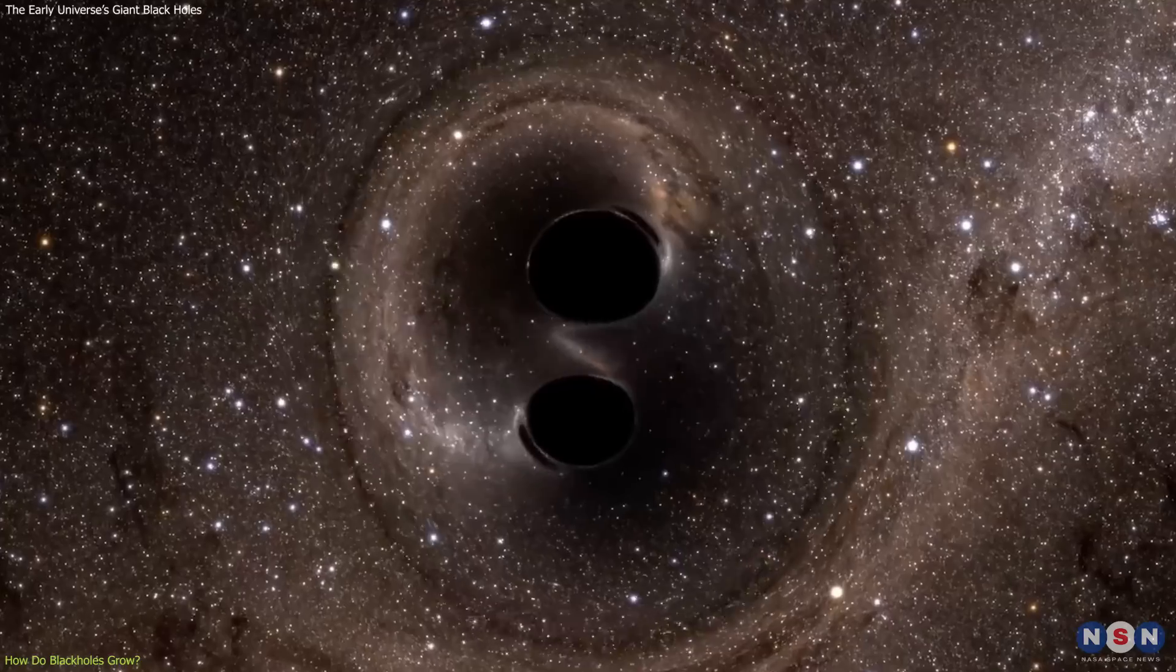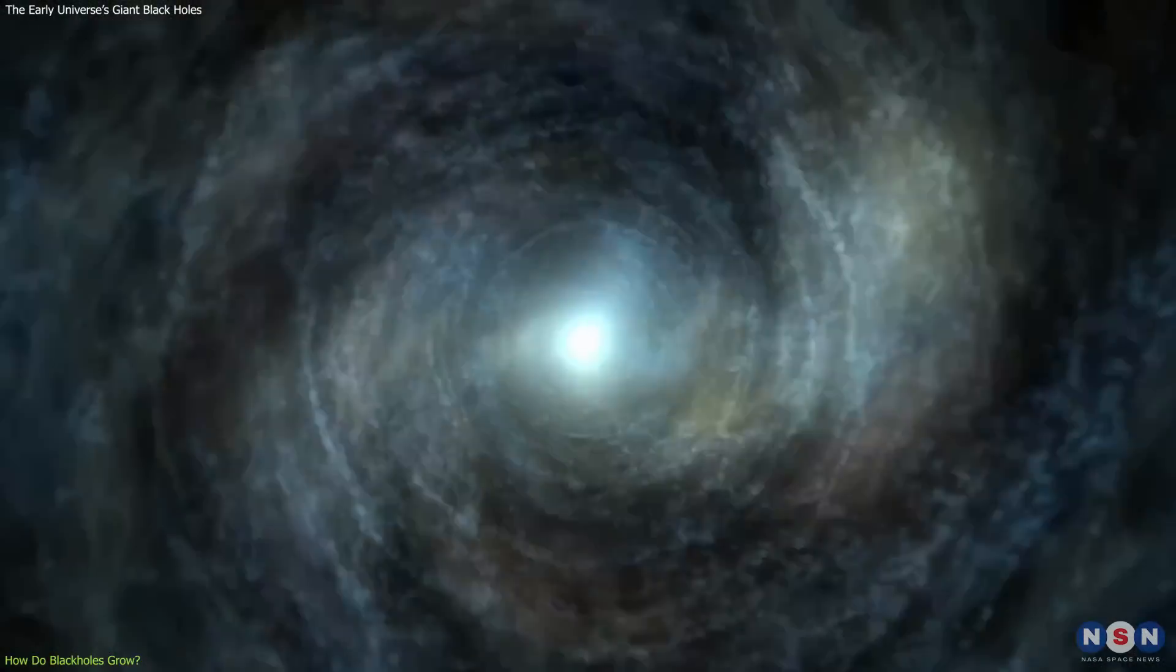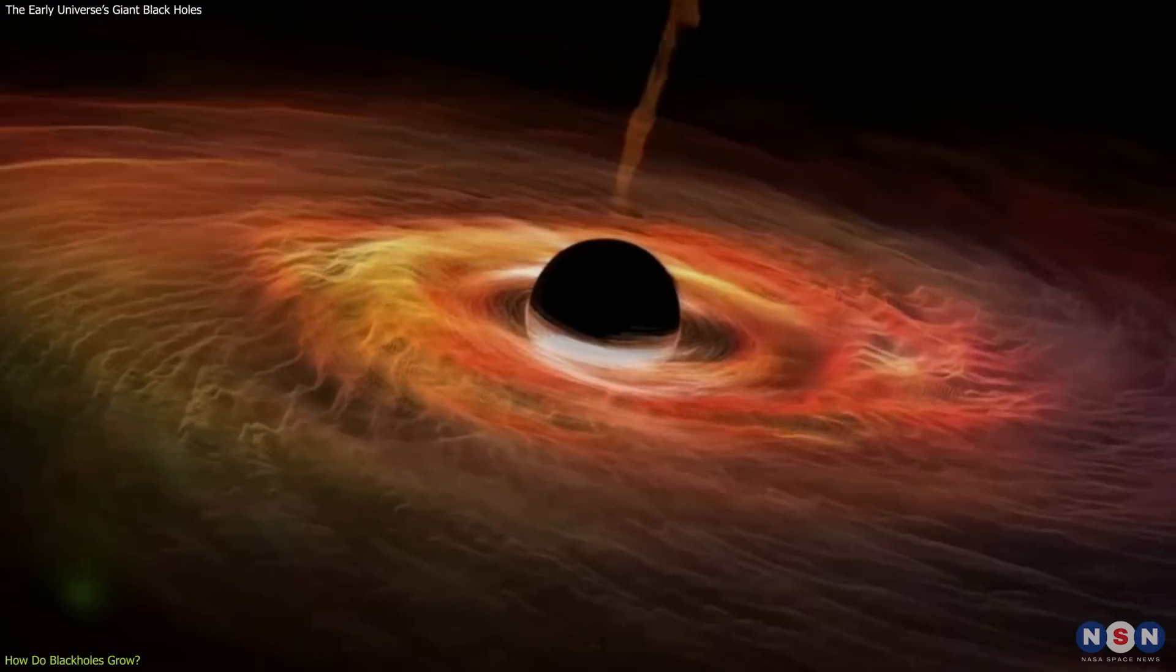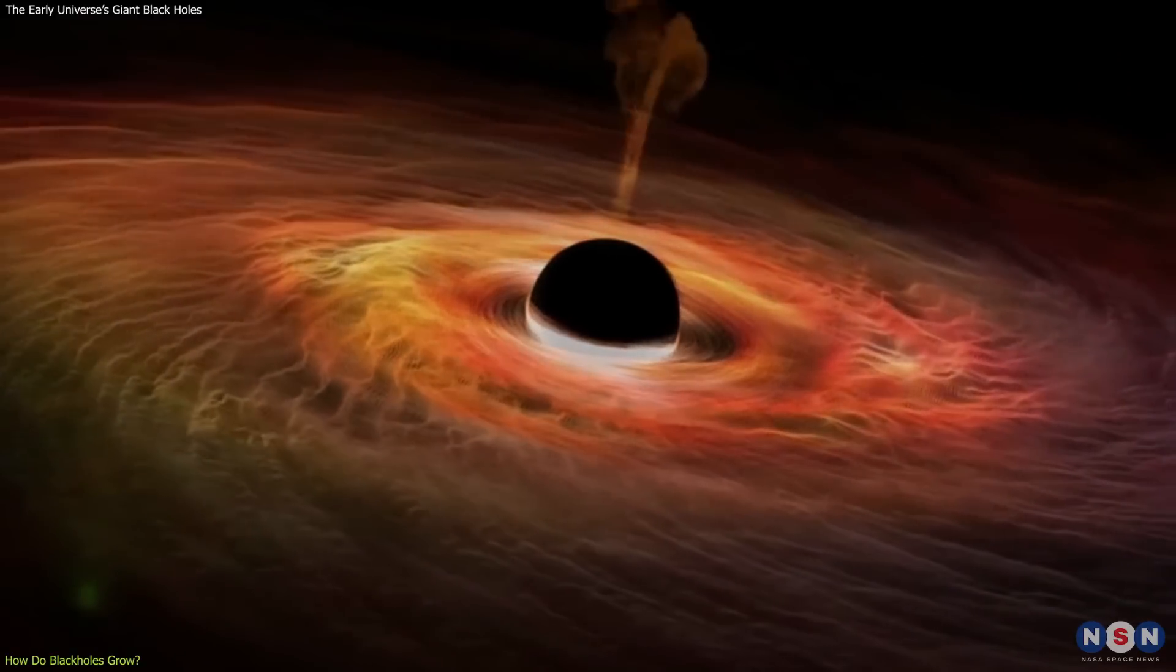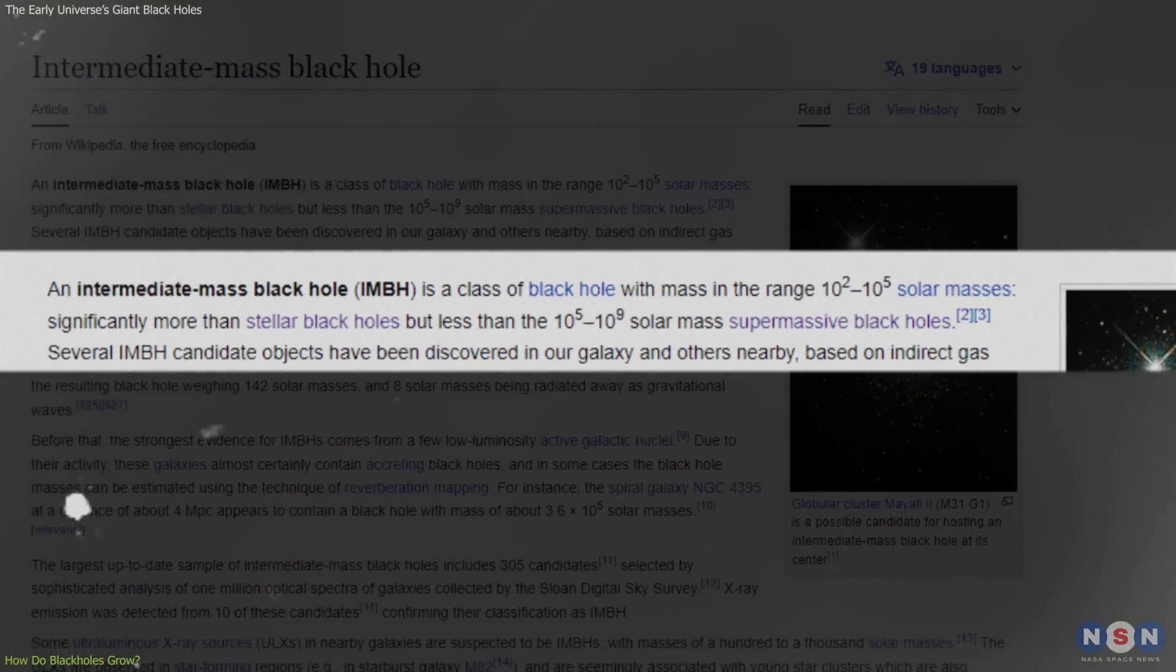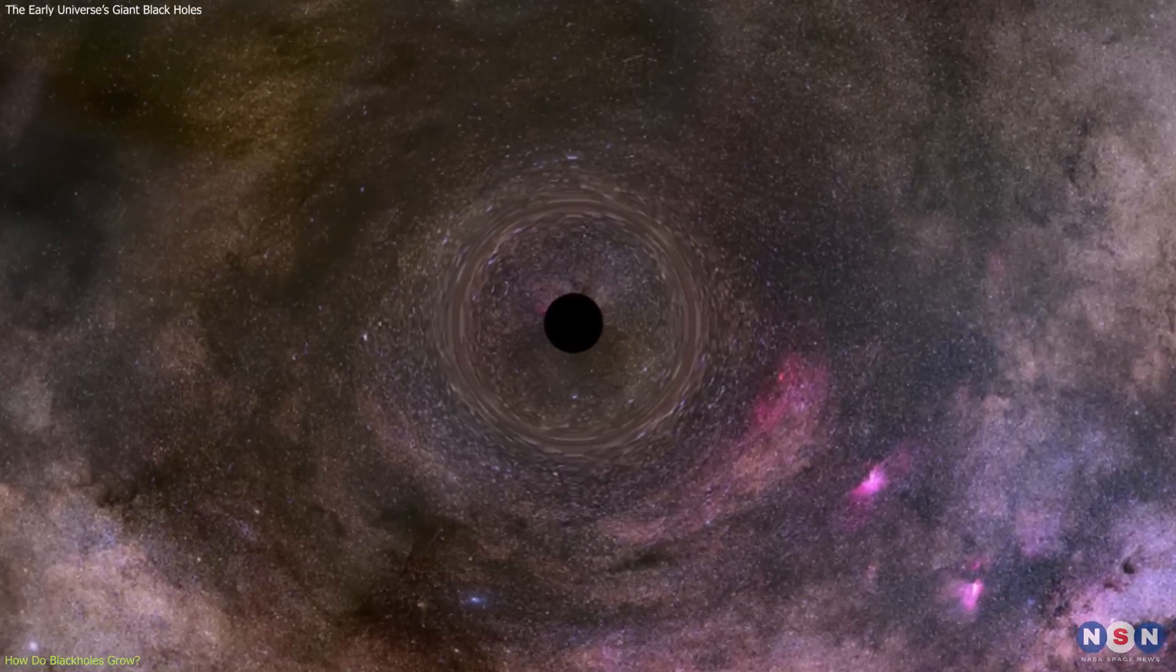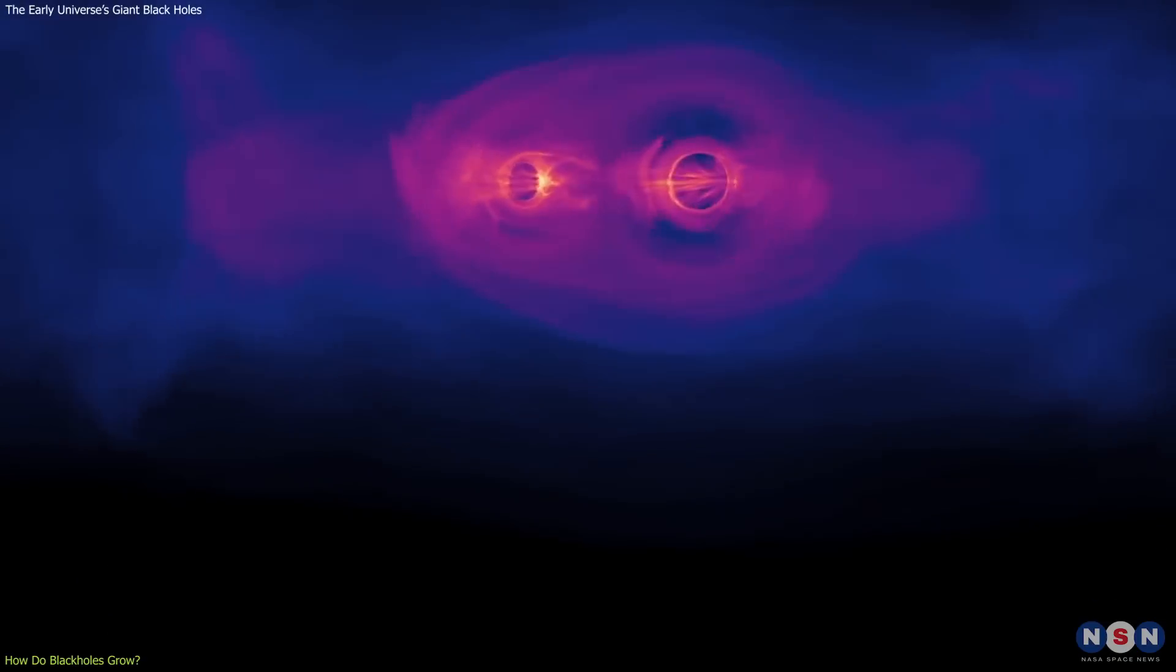The origin of these monsters is still a mystery, but one possibility is that they started as smaller black holes that merged with other black holes or swallowed large amounts of gas and stars over time. There is also a third type of black hole, which is intermediate between stellar mass and supermassive ones. These are called intermediate mass black holes, which have masses between hundreds and thousands of times that of our sun. They are very rare and hard to detect, but some astronomers think they could be the seeds or building blocks of supermassive black holes.